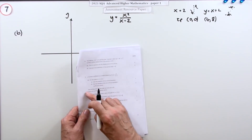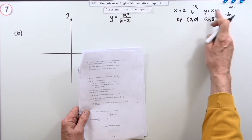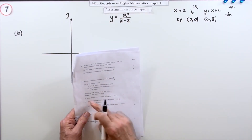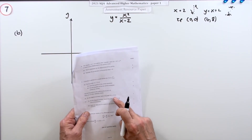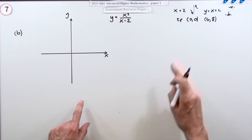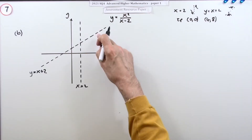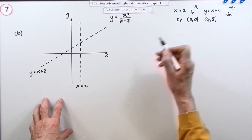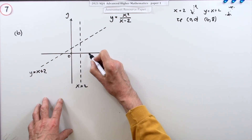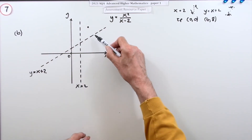Part b: we're told the turning points of the graph are (0, 0) and (4, 8). I've noted the two asymptotes and the way the graph should approach them. For one mark, sketch the graph of y equals f(x). The graph has a vertical asymptote at x equals 2, a non-vertical asymptote y equals x plus 2, and a turning point at the origin - which is quite handy - and a turning point at (4, 8).